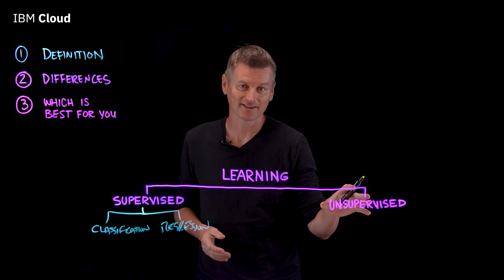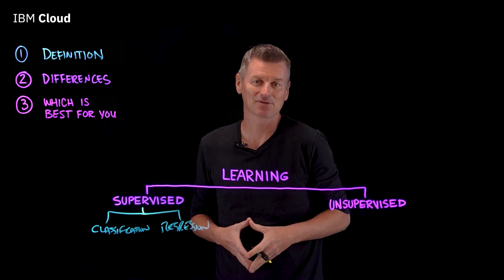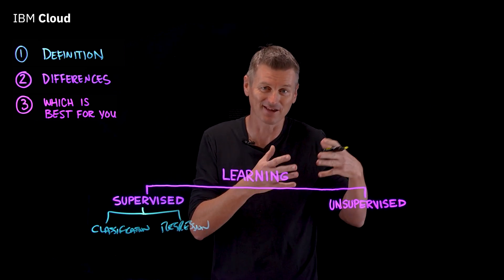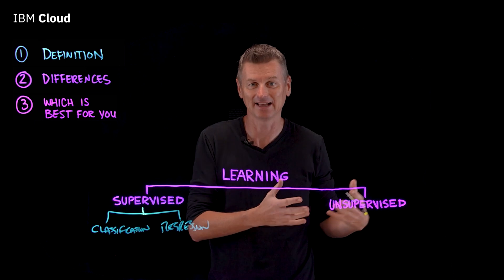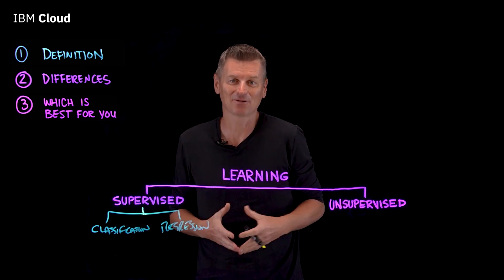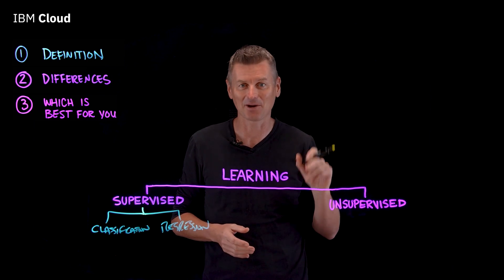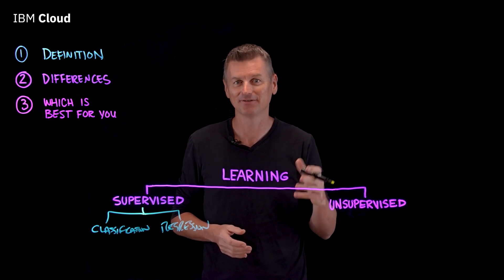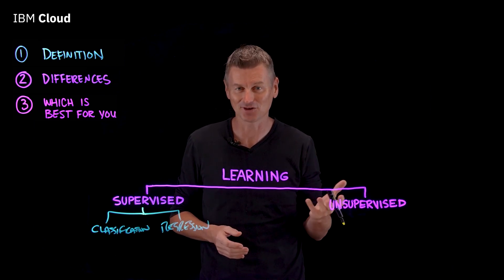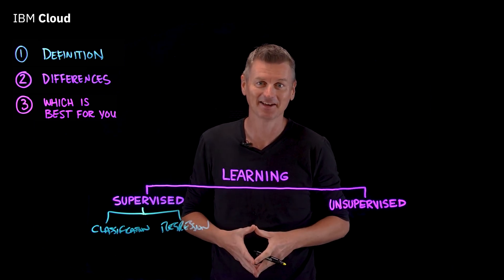Unsupervised learning is where the machine learning algorithm is not given any labels at all. These algorithms discover hidden patterns in data without the need for human intervention — they're unsupervised.